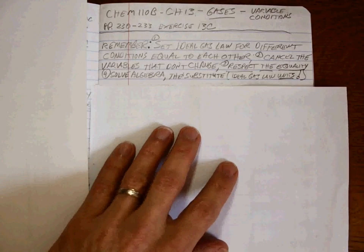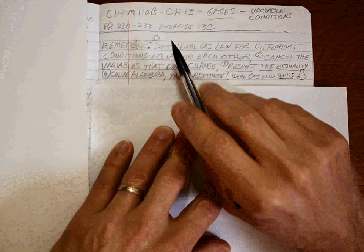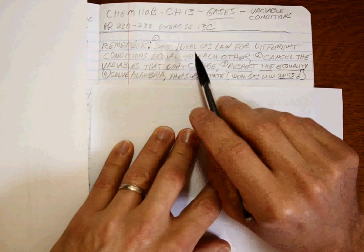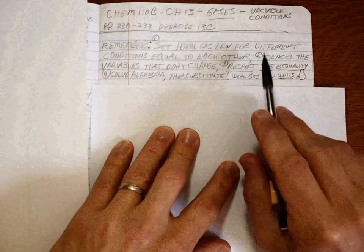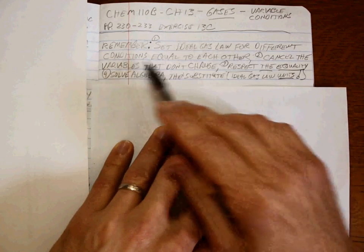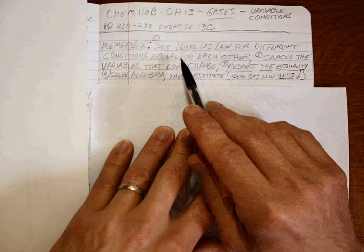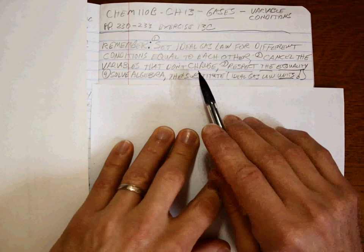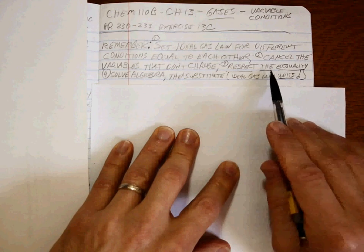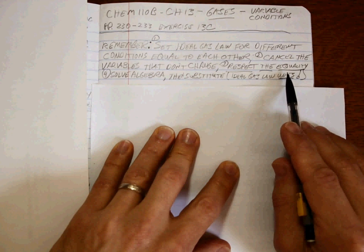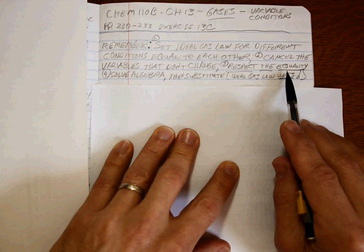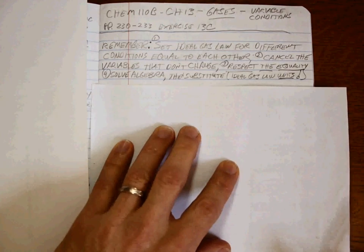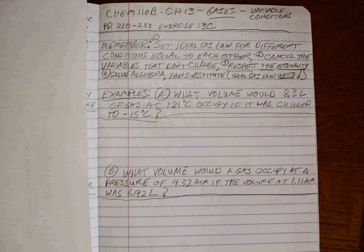So there's a few things to remember, and the things to remember look awful, but it actually takes very little time if you're careful. Since the two different sets of conditions are still under ideal gas law conditions, whenever we have two different sets of conditions, we simply set the ideal gas law equal to each other, keeping track. And then we cancel the variables that don't change, leaving only the ones that do change. We make sure that we respect the equality in the algebraic equation that we write. And then we solve the algebra for what we want.